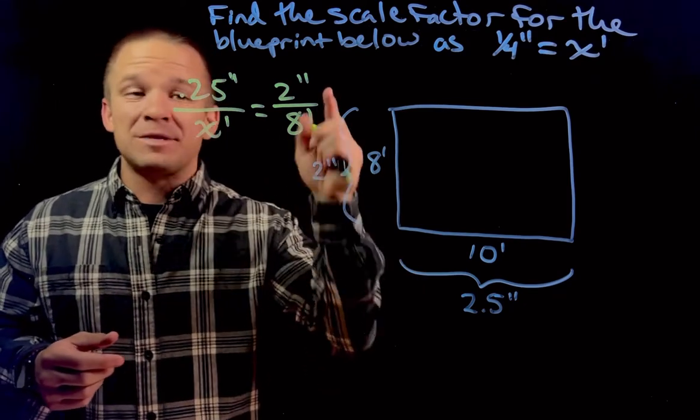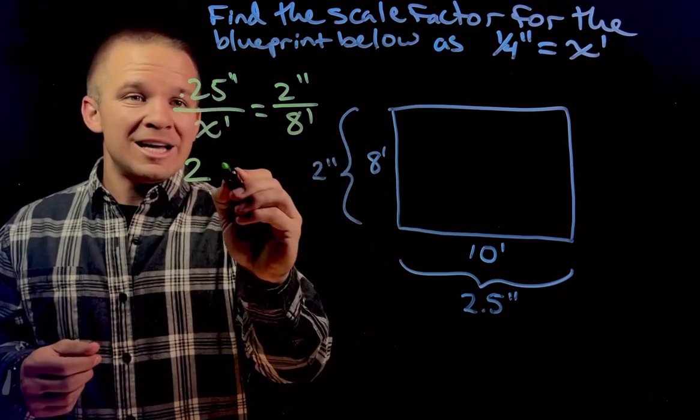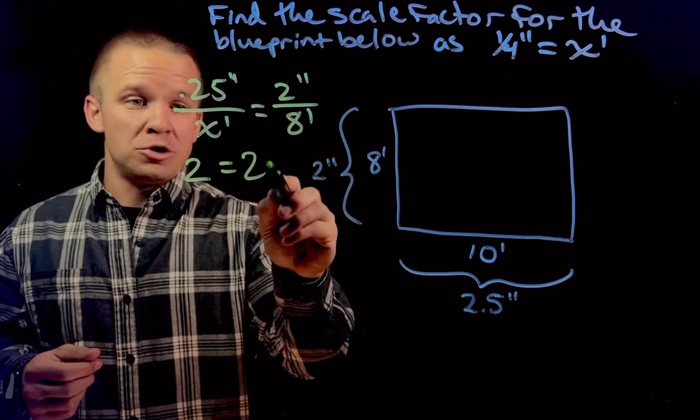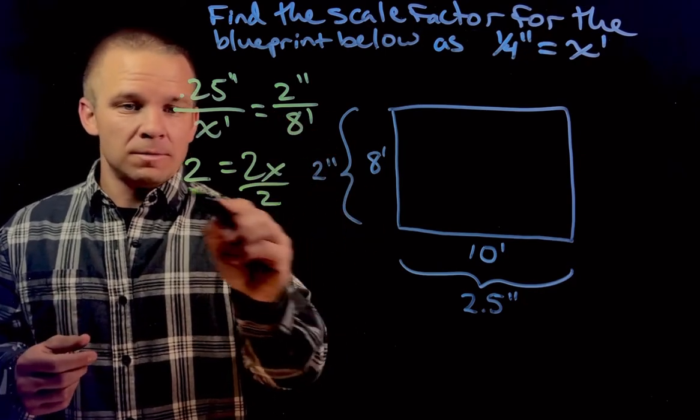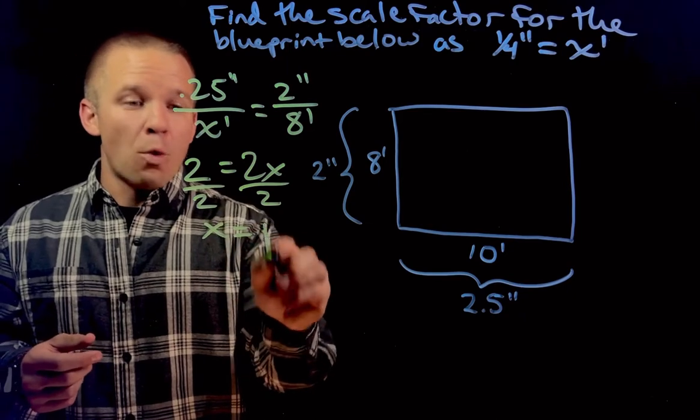So 0.25 times 8 would be 2, equals, and then X times 2 would give me 2X. Divide by 2 and I'm gonna get X equals 1.